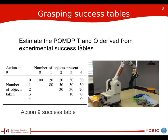We need the POMDP transition (T) and observation (O) model matrices, which are derived from experimental success tables. Success tables capture the relation between the number of objects taken or perceived and the number of objects present in the scene. For example, when there were three objects, on average one in every ten trials the robot grasped all three, which didn't happen with four objects. These tables are obtained for every action through experimentation.